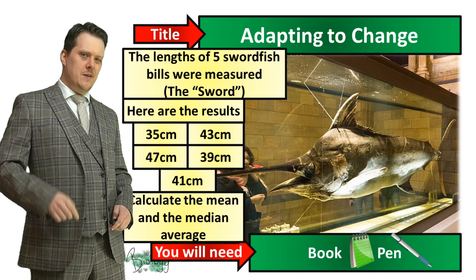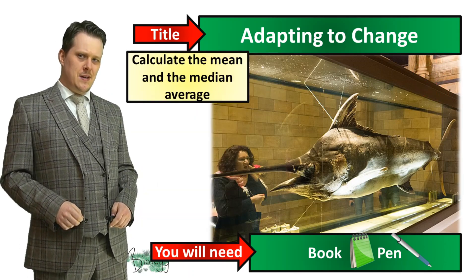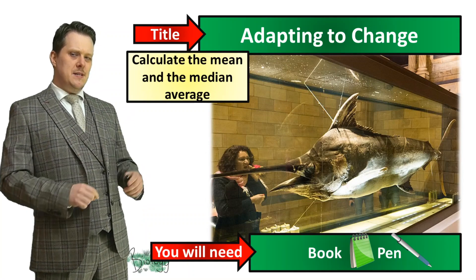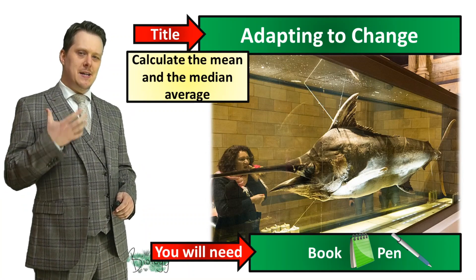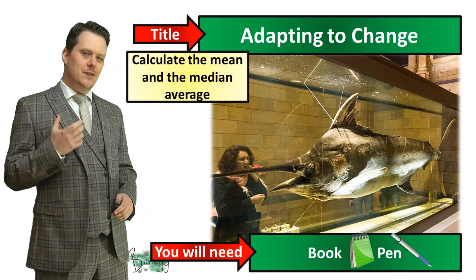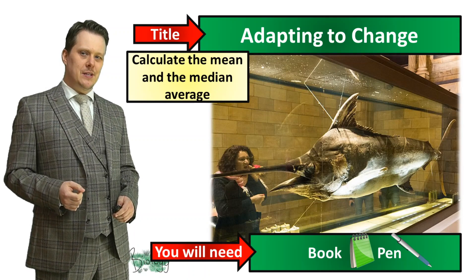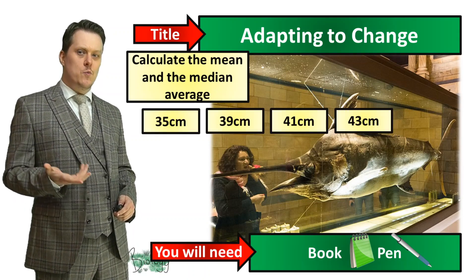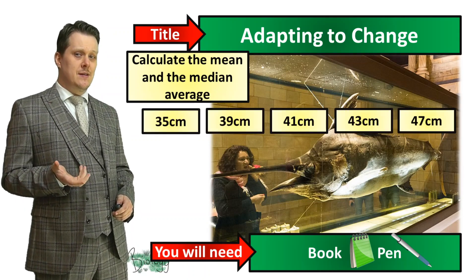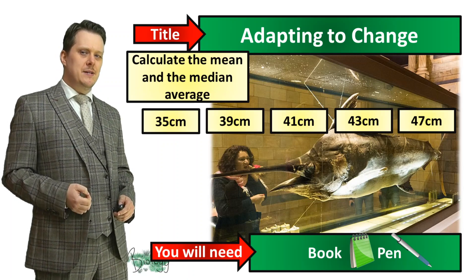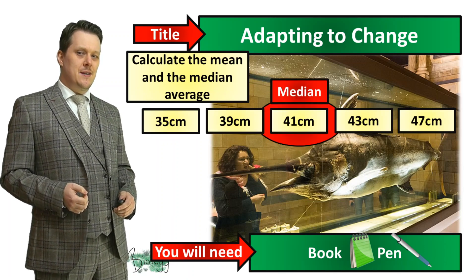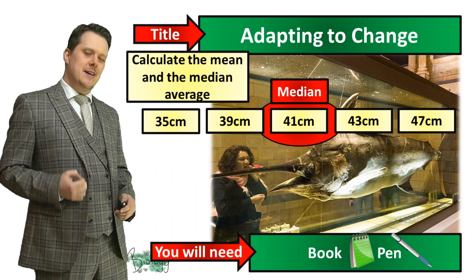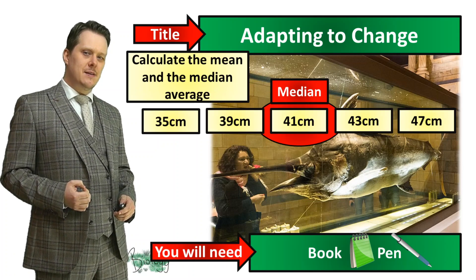Have we got those averages? Let's have a look. I'm going to start off with the median average, so I want to put my data set in numerical order. Starting at the bottom: 35, 39, 41, 43, and 47. The one in the middle is 41 centimetres, and that is my median average.